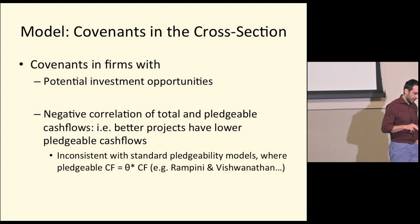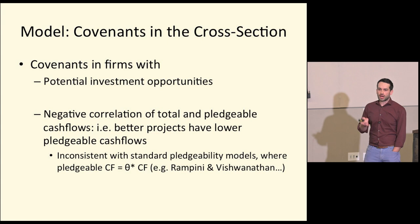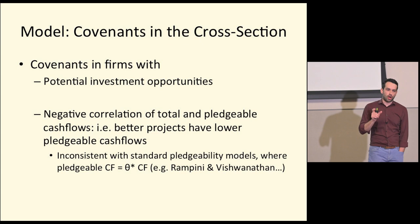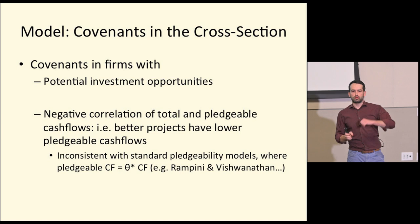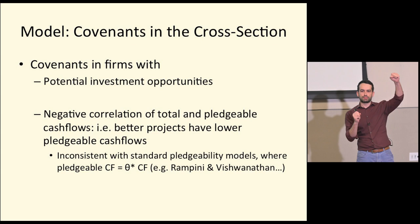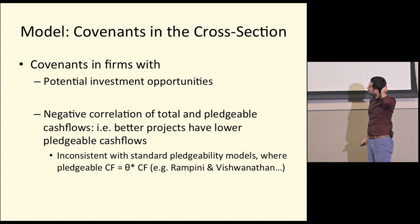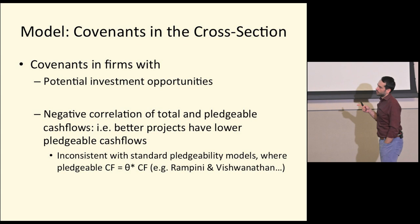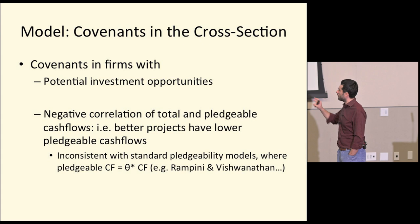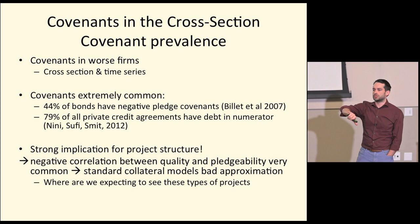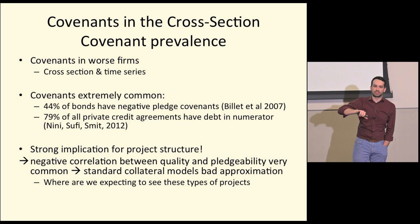On covenants in the cross-section, the model predicts two important things. First, negative pledge covenants should appear in firms that will have some potential good investment opportunities. Second — and this I found quite interesting — negative pledge covenants are efficient only insofar as there is a negative correlation between how good a project is and its pledgeable cash flows: better projects have less pledgeable cash flows. I wanted to know more about where exactly we expect to see these projects — and whether theta-k style models, where pledgeable cash flows scale with quality, would win out instead.